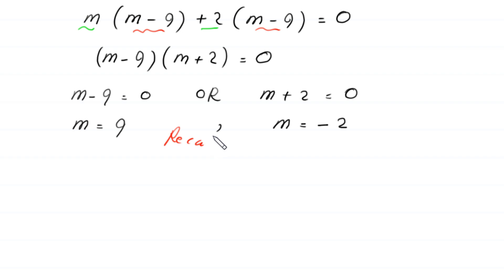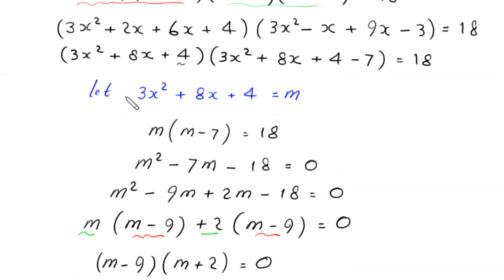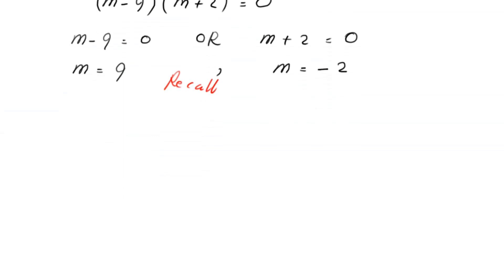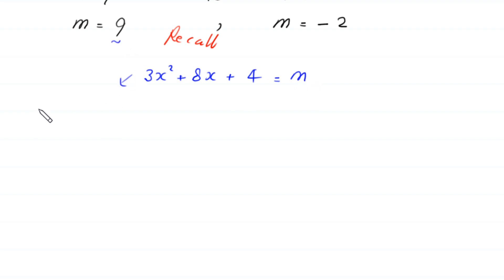Now recall that we supposed that 3x squared plus 8x plus 4 is equal to m. So when m is equal to 9, this equation will become 3x squared plus 8x plus 4 is equal to 9.